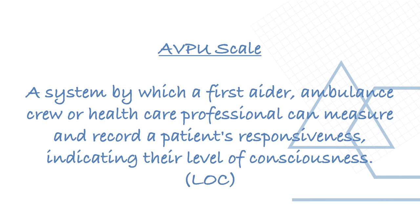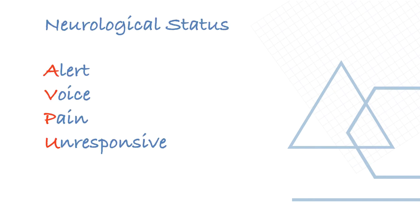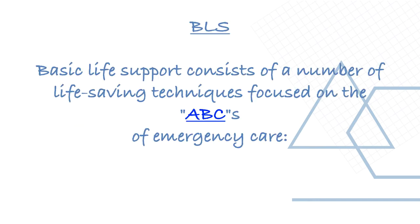The AVPU scale is a system by which a first aider, ambulance crew, or healthcare professional can measure and record a patient's responsiveness, indicating the level of consciousness. It is a neurological status scale. A is Alert, V is Voice, P is Pain, and U is Unresponsive. It gives a gross assessment of neurological status.